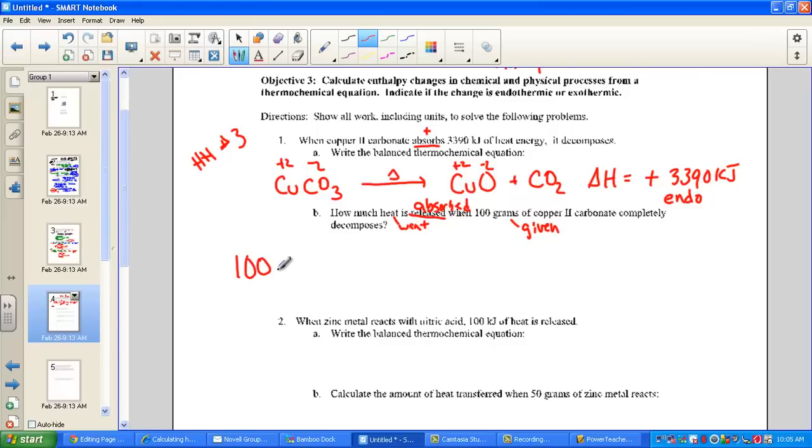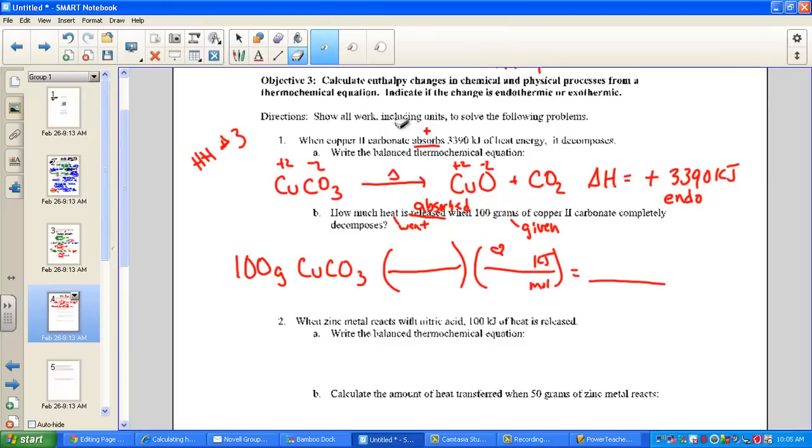We want to know heat given the mass of copper 2 carbonate. When we start with our given quantity, 100 grams of copper 2 carbonate, we can see a two-step stoichiometry journey, where the heart of our problem will compare kilojoules per mole. We want to know kilojoules from the number of moles. So here's our target, kilojoules of heat. We know it will come out positive because decompositions absorb heat.